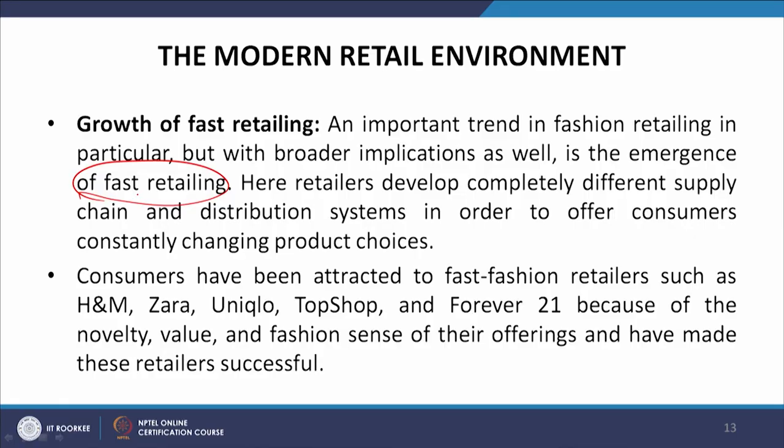Another change is the growth of fast retailing. An important trend in fashion retailing in particular, but with broader implications, is the emergence of fast retailing, where retailers develop completely different supply chain and distribution systems in order to offer consumers constantly changing product choices. Consumers have been attracted to fast fashion retailers such as H&M, Zara, Uniqlo, Topshop and Forever 21 because of the novelty, value and fashion sense of their offerings, and have made these retailers successful.